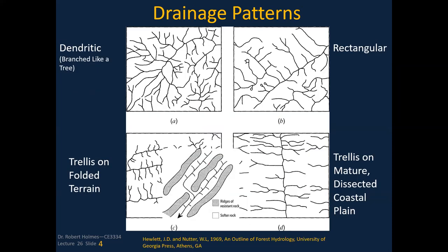There are a lot of different types of drainage patterns. This is a traditional dendritic pattern you'd see in much of the Midwestern United States. Sometimes you'll find a rectangular pattern, called a trellis pattern, and then there's trellis on folded terrain. Just be aware that these patterns do have an influence on how fast and how quickly water comes off the watershed.